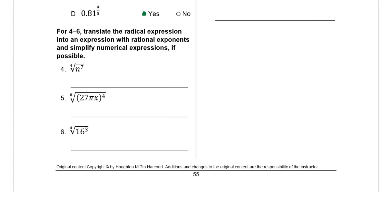Now questions 4 through 6: translate the radical expression into an expression with rational exponents and simplify numerical expressions if possible. The reason it specifies numerical expressions is that on this first one we could simplify — like you can take out an n from the fourth root of n to the seventh — but that's not what it's asking. We should not do that here.